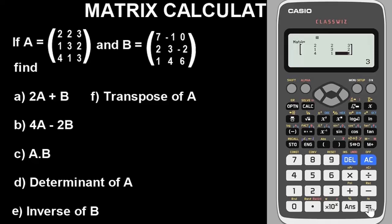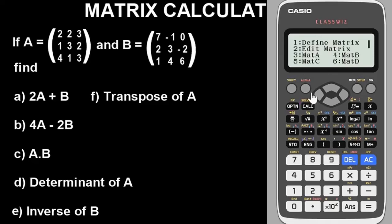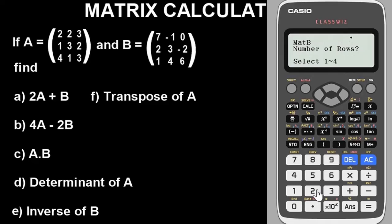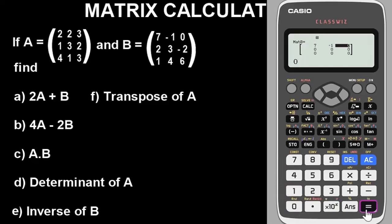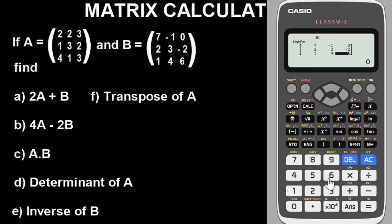Press the AC key to go back and now define matrix B. Select option 1 then define matrix B — that's option 2. Matrix B also has 3 rows and 3 columns. Enter the values: 7, negative 1, 0, then 2, 3, negative 2, then 1, 4, and 6. Having entered these values, they are now stored.